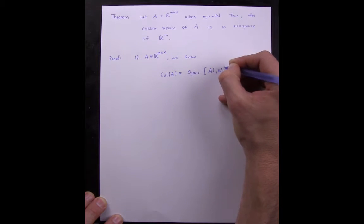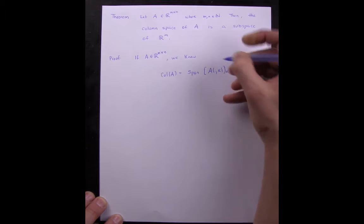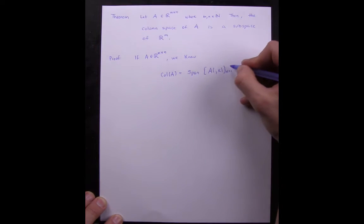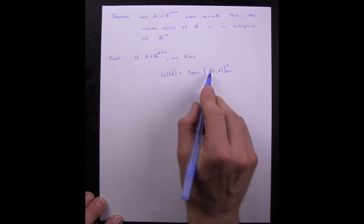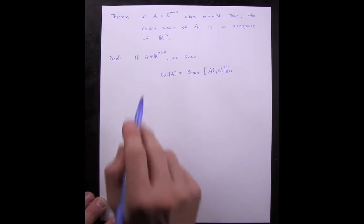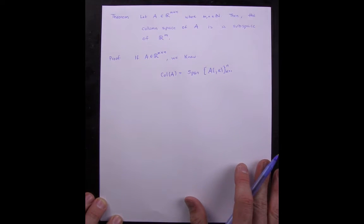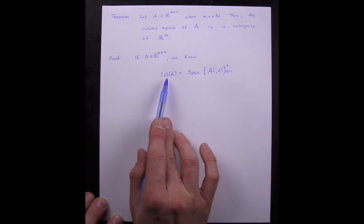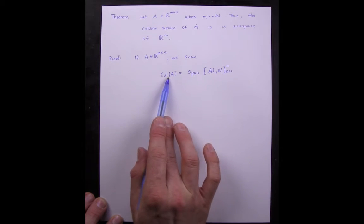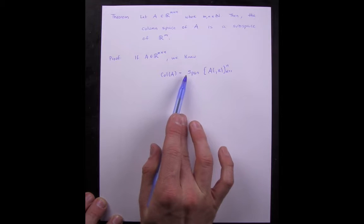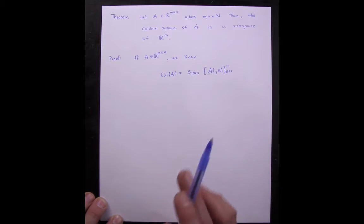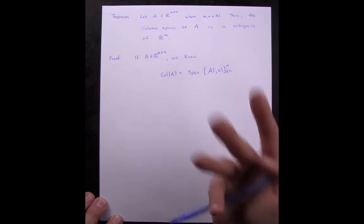In this case, there are N columns, so this is a span of N different columns, each of which is an M by 1 vector. In order to show that the column space is a subspace, we have to show three properties.